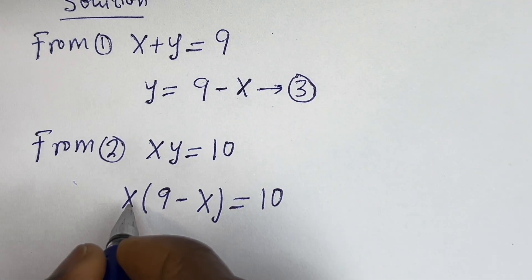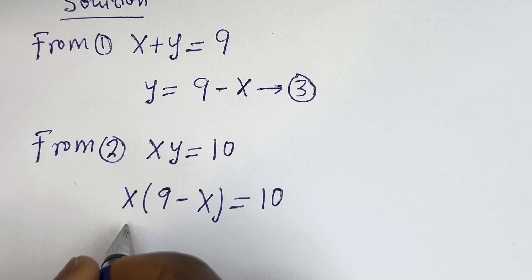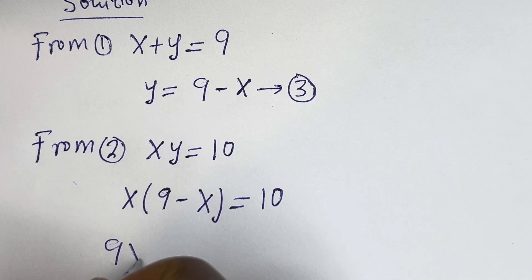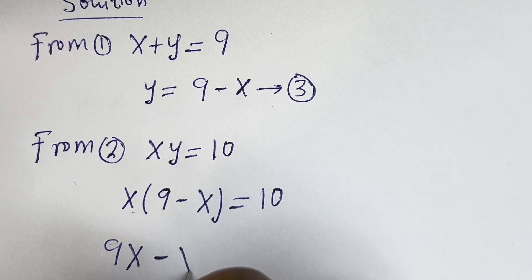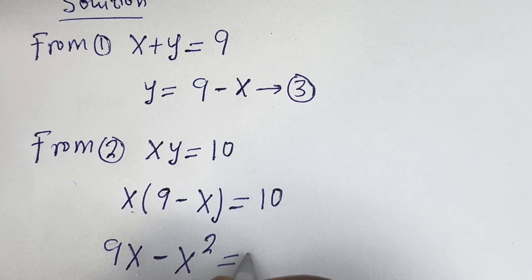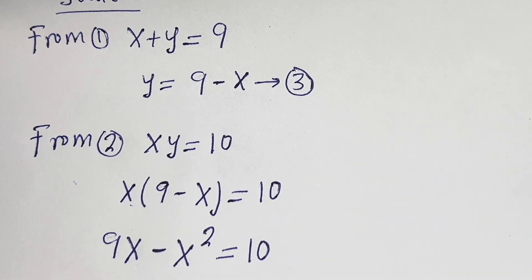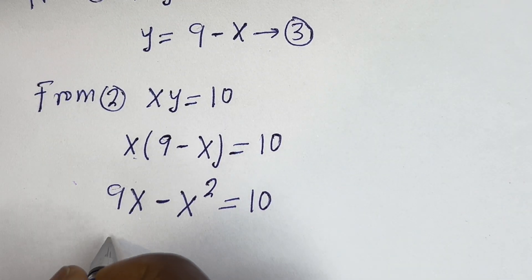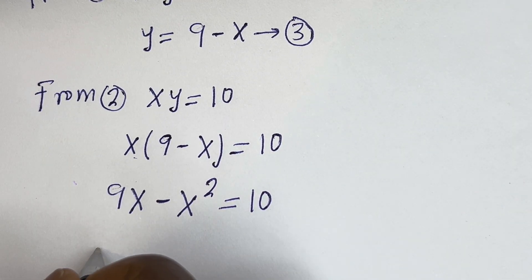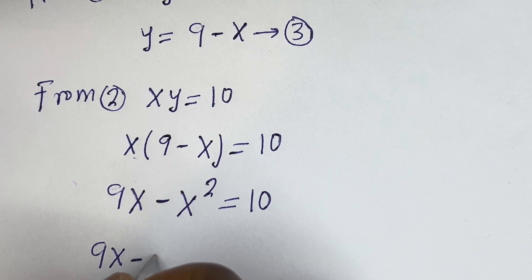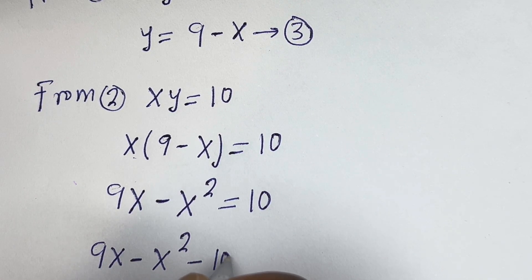Let's open the bracket: x multiplied by 9 is 9x, minus x multiplied by x is x squared. So 9x minus x squared is equal to 10.